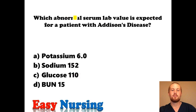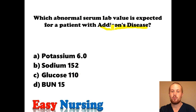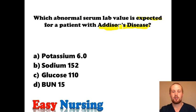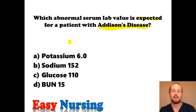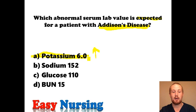Which abnormal serum lab value is expected for the patient with Addison's? With Addison's, you're going to have a low aldosterone level, so instead of holding on to salt and water, you're going to be holding on to potassium. Expect a high potassium — here you'll see a potassium of 6.0, which is a high potassium.